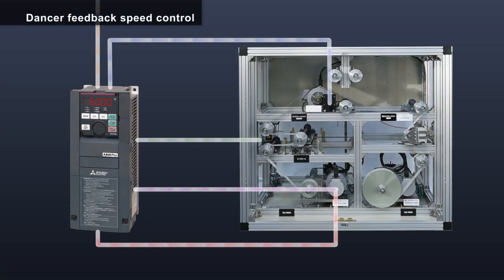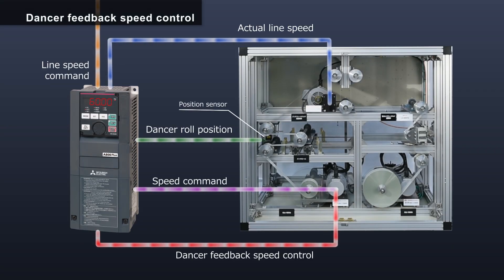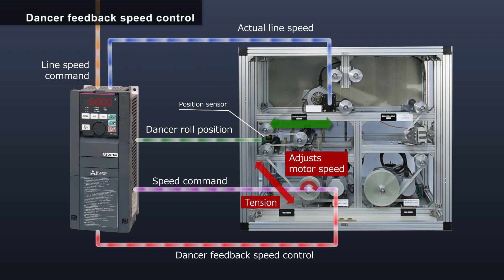The dancer feedback control maintains constant tension on the dancer roll by keeping the roll in place utilizing line speed and dancer roll positioning data to adjust the speed of both the winding and unwinding shafts.